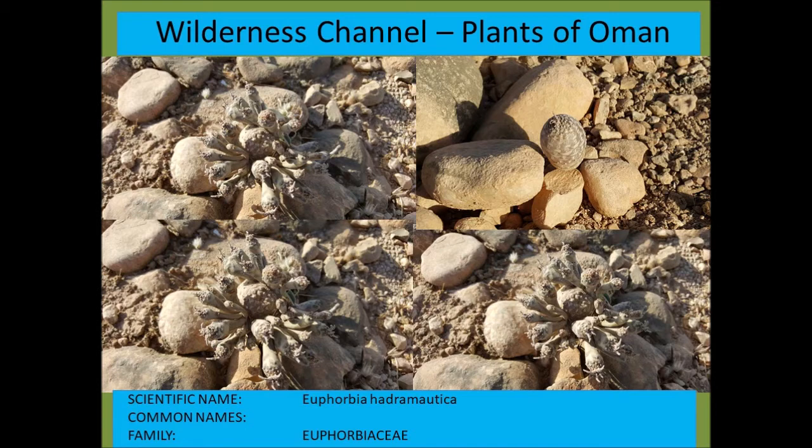Euphorbia hadramautica is a very interesting succulent. It's not very obvious to see — consider how dried-out it looks and how well camouflaged it is amongst the rocks. But it does produce a crown of green leaves in the rainy season.